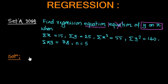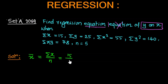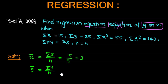First, find the mean of x variable. x bar equals sigma x divided by n, which gives 15 divided by 5, so the value is 3. Next, the mean of y variable: y bar equals sigma y divided by n, which gives 25 divided by 5, so the value of y bar is 5.